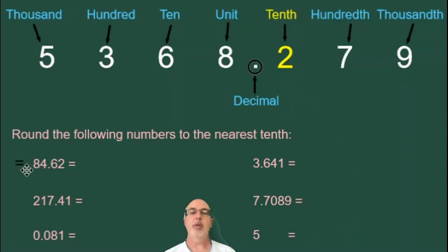The first example is 84.62. The six is in the tenth position, and the number to the right of that six is a two, which is smaller than five, so we're rounding down. 84.6 is the answer when we round this number to the nearest tenth.